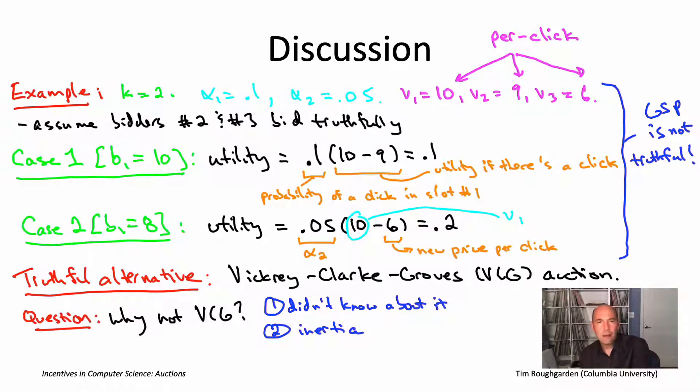Back in the early days, Google also said that they found the generalized second price auctions easier to explain to advertisers. It was just easier to understand that you pay the bid of the next highest bid of a competitor as opposed to some sort of weighted average of all the lower bids. And that argument probably held some water back in the early days. Honestly, now, as these auctions have evolved over time, there's enough of the auction that is sort of so opaque to advertisers. I don't think explanatory power is relevant anymore.